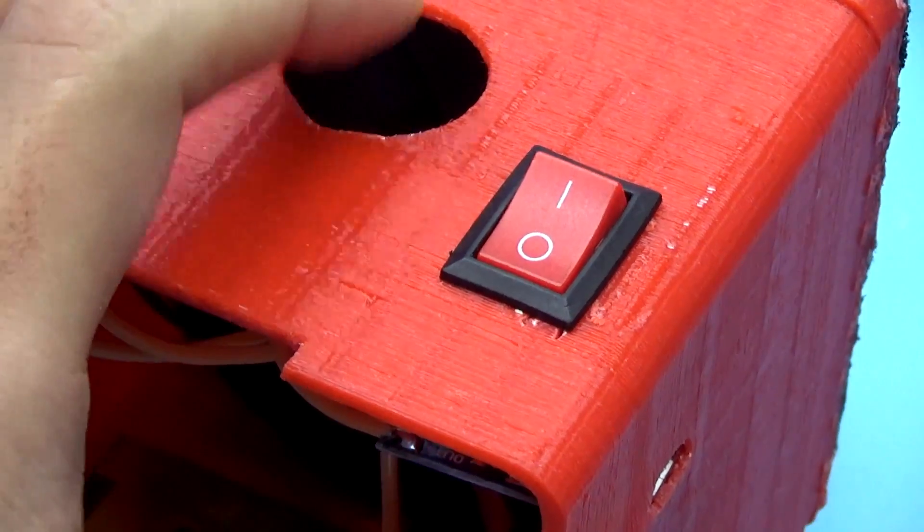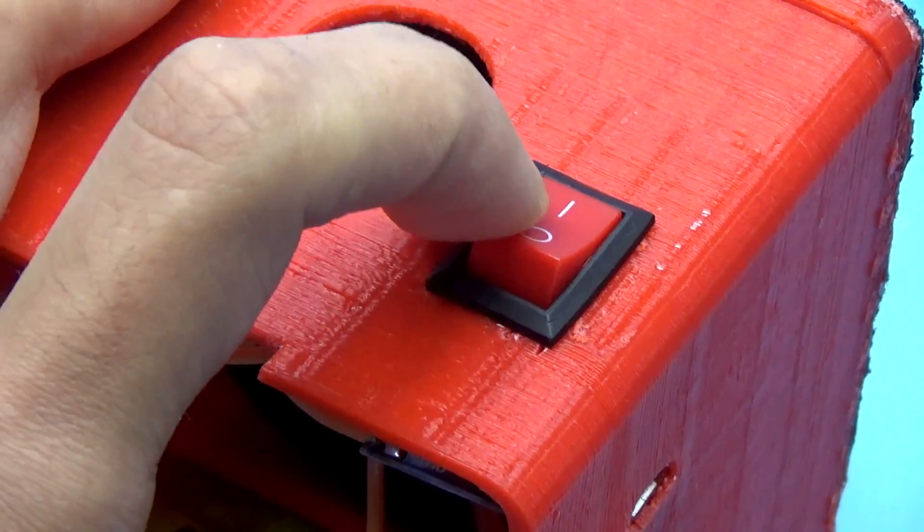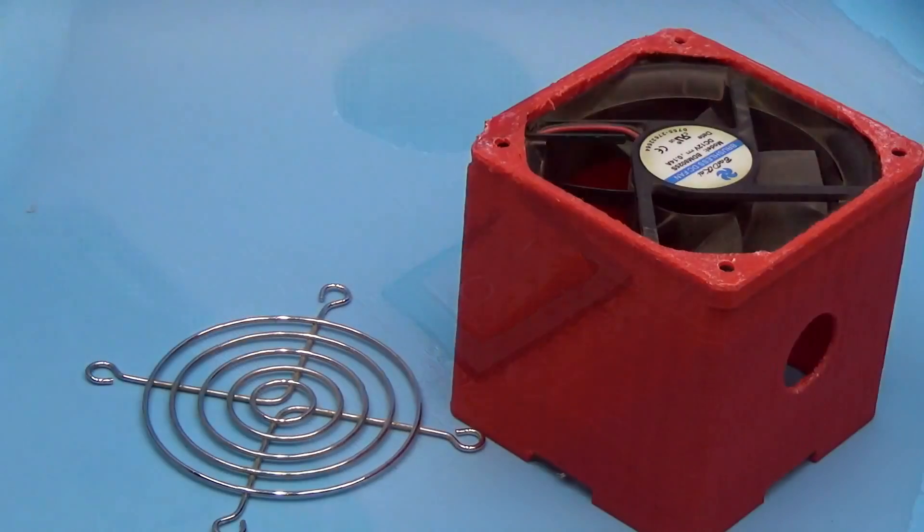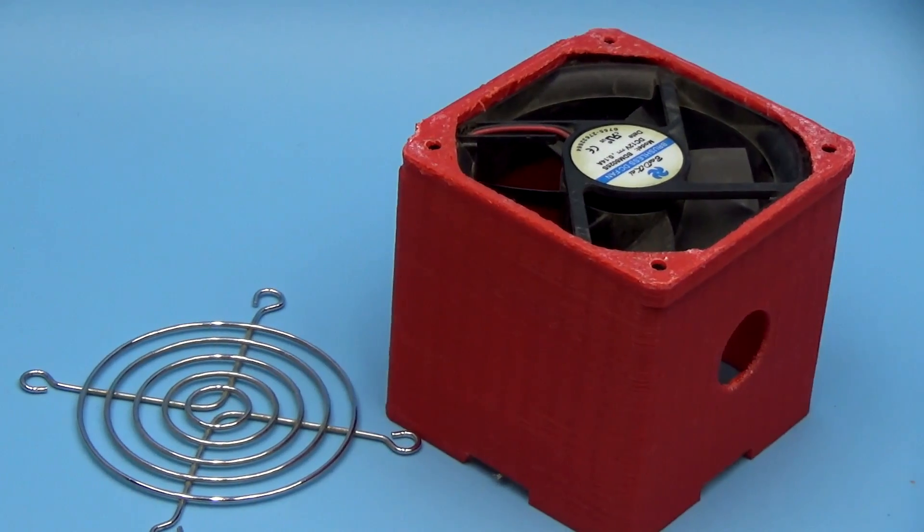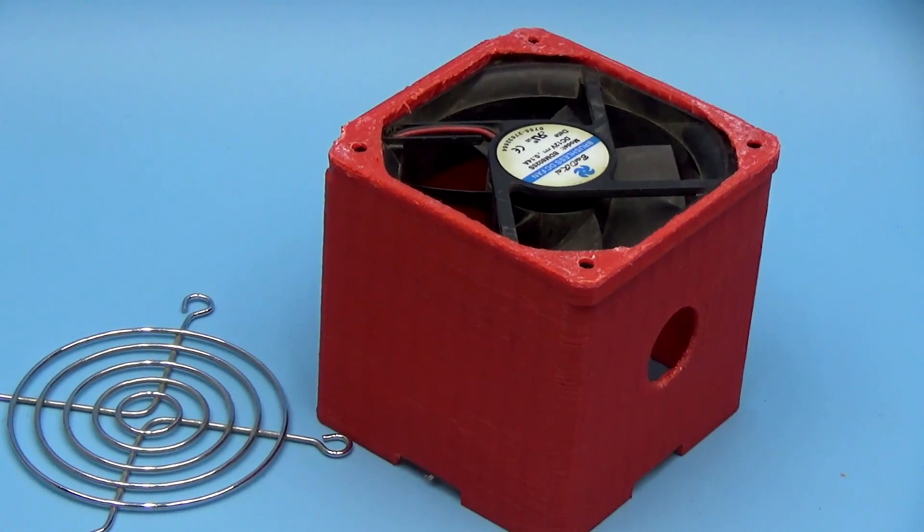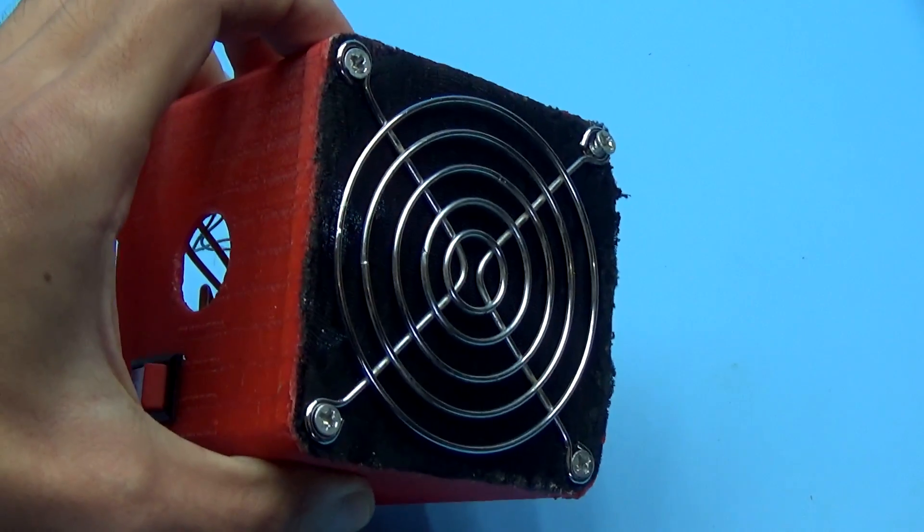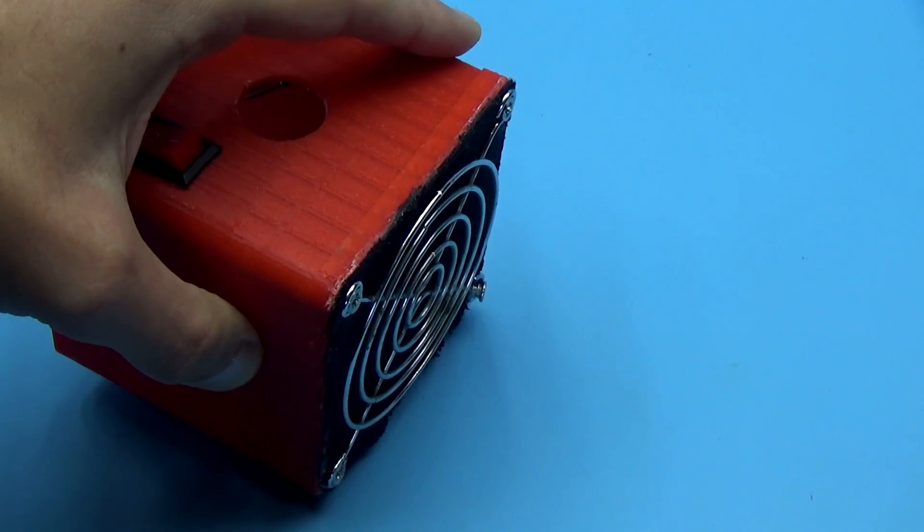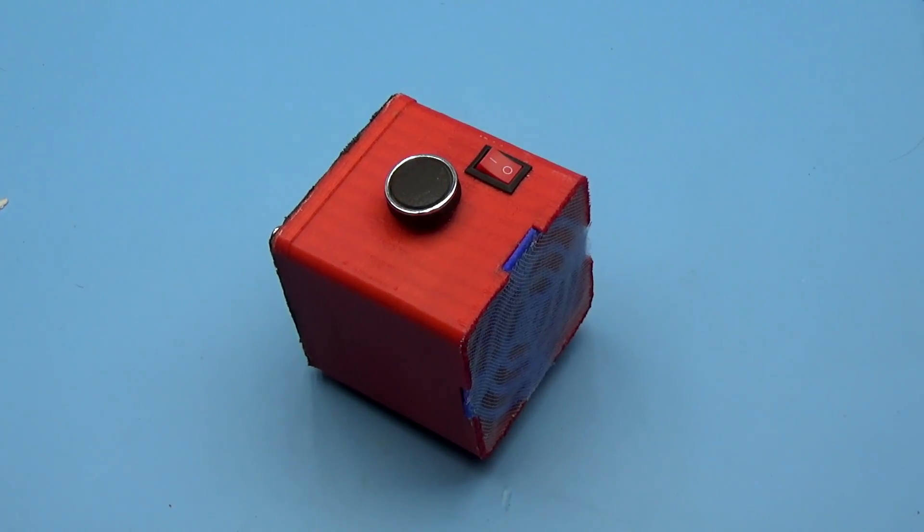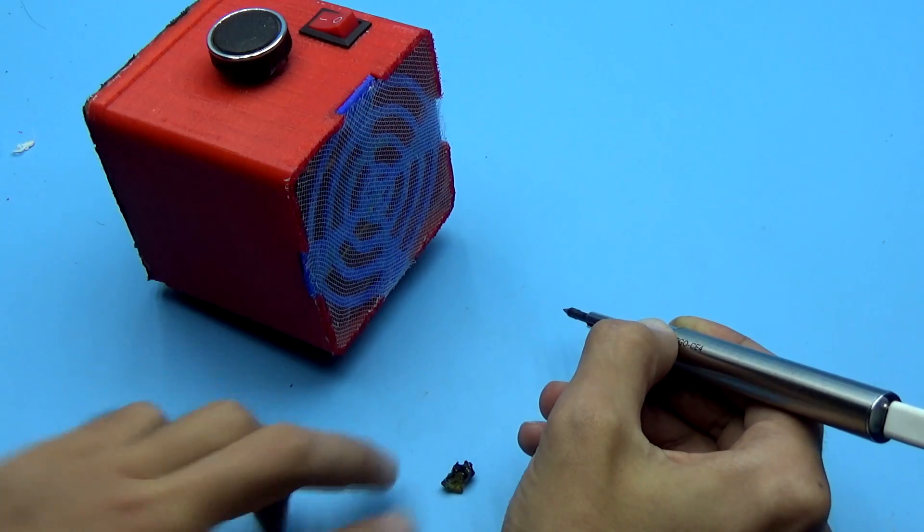The power switch could be any. You can take one from a computer power supply. To protect the fan, a standard grill was used and I added a piece of fabric which simultaneously plays the role of a filter. I didn't make it very neatly, but this doesn't affect the work. Well, in principle, the device is ready. It remains to test it in action.